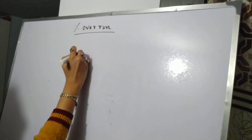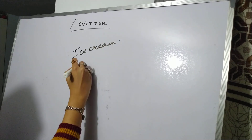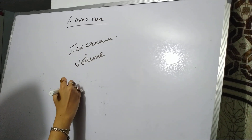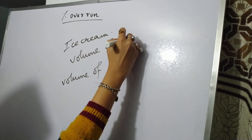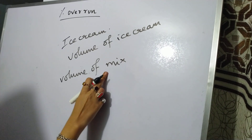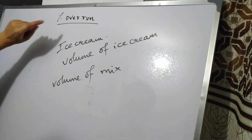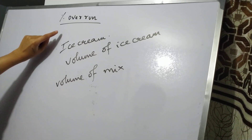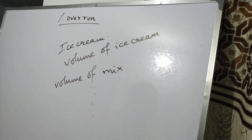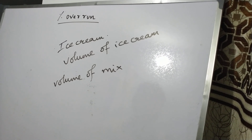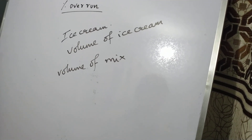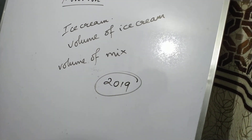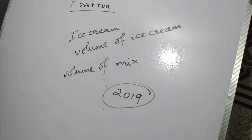In that previous video I already discussed what percentage overrun is. As you already know, it is related to ice cream — specifically the volume of ice cream and the volume of mix used to produce the ice cream. Based on these two we calculate percentage overrun. I am not discussing it in detail again since I covered it previously. The reason I am discussing percentage overrun here is because there is one more formula, based on which a numerical came in the 2019 GATE exam. To solve that numerical you need this other formula, so let me tell you about it.